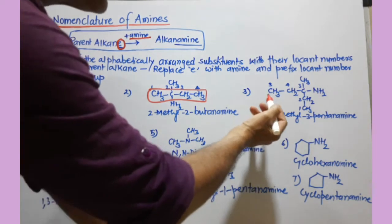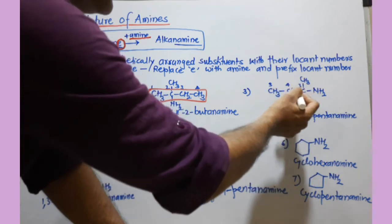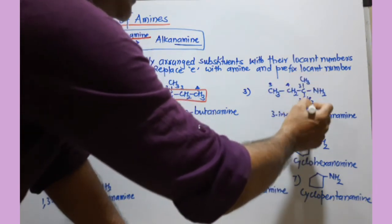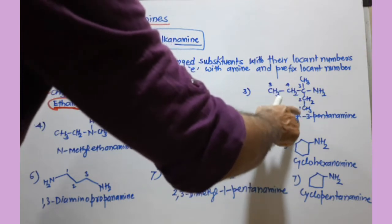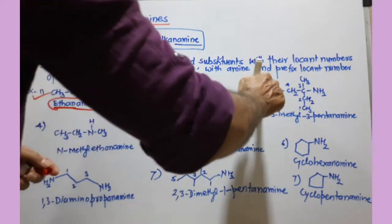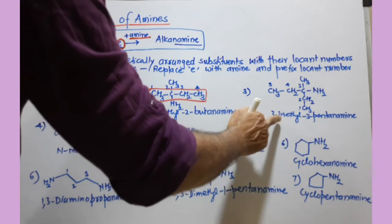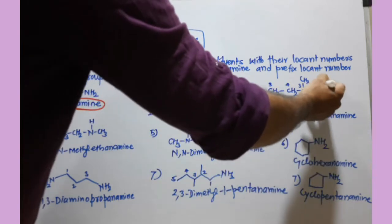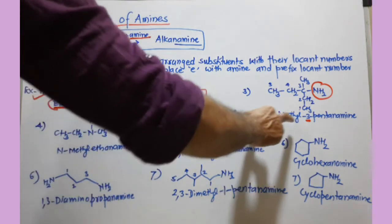Here I select the longest chain of carbon — 1, 2, 3, 4, and 5 carbons. A chain of only 4 carbons would be wrong; I need the longest chain. I provide numbers to the selected chain: numbering from either end gives 3 for the amino-bearing carbon, so I have liberty to start from either end. At the third position there is a methyl group. I replace the 'e' of pentane with 'amine' — that becomes pentanamine. The amino group is present at the third carbon, so its locant is 3. The name is 3-methyl-3-pentanamine.